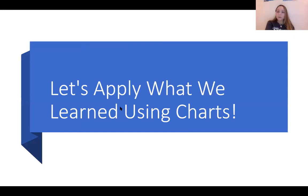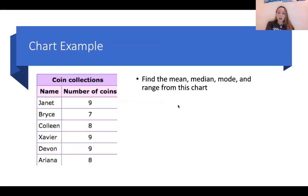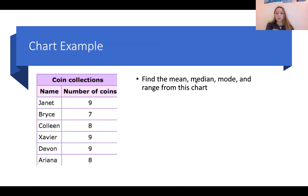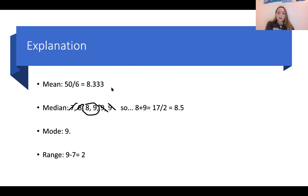After that refresher, I want you to apply what we learned using actual charts. I have a chart example — it's coin collections, with people's names and the number of coins they collected. I want you to find the mean, median, mode, and range from this chart. For the mean, we add up all the numbers which equals 50, then divide by 6 because there are 6 values. We get 8.33 as our average.